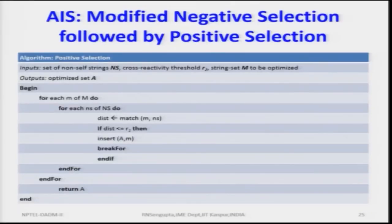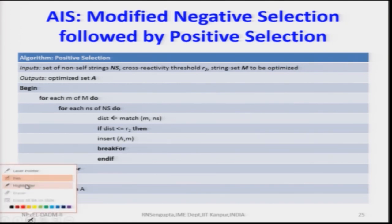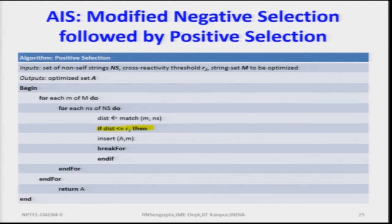The ratios must be compared both individually and collectively to determine how many cross the threshold, based on which we can say whether the company is heading for bankruptcy. The optimized set A is built such that for each element of capital M, if the distance is less than or equal to R2, that element is put into the positive set, and the search continues until exhausted.